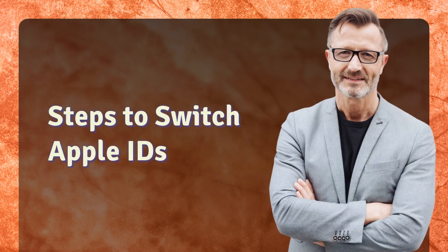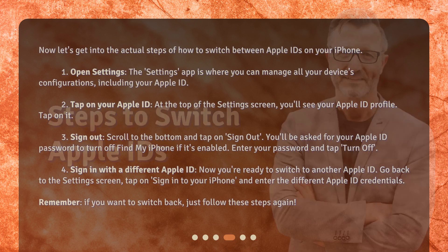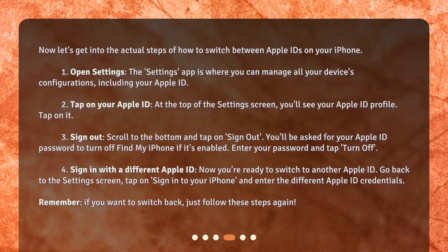Steps to switch Apple IDs. Now, let's get into the actual steps of how to switch between Apple IDs on your iPhone. Step 1: Open Settings. The Settings app is where you can manage all your device's configurations, including your Apple ID. Step 2: Tap on your Apple ID. At the top of the Settings screen, you'll see your Apple ID profile. Tap on it.